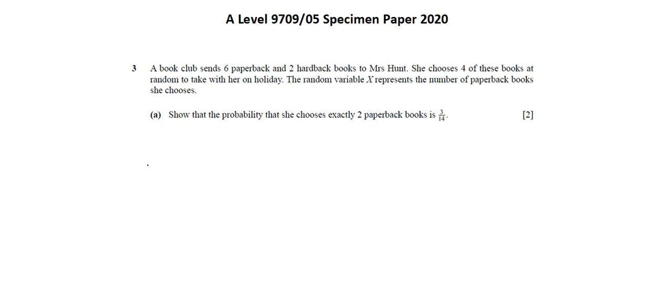X is our variable. We're calculating the probability that X equals 2. In setting up the probability, I want to think about what's happening in this situation. Mrs. Hunt is going to choose four books. There are paperbacks and there are hardbacks. We want to look at the probability of choosing exactly two paperback books and confirm that our result is 3 of 14.